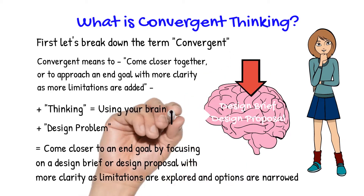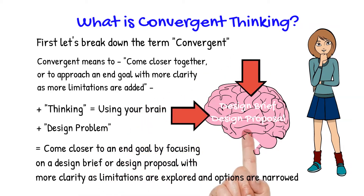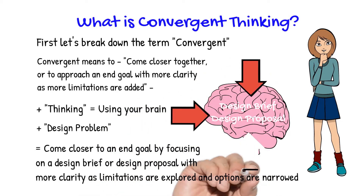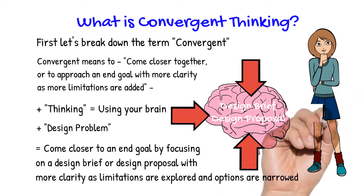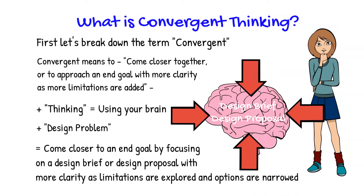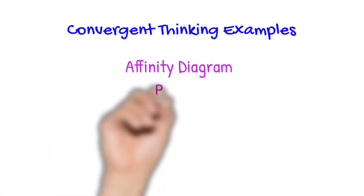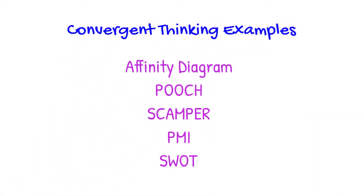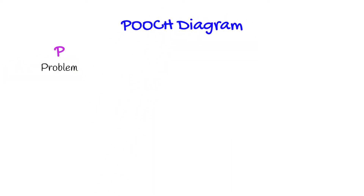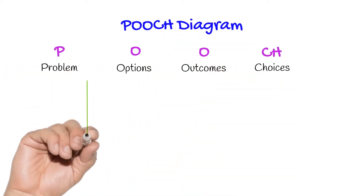As limitations are explored, options are narrowed. This step is applied after you've gone through a process of divergent thinking and need to narrow down your outcomes. Let's have a look at some convergent thinking examples: the affinity diagram, the POOCH model, the SCAMPER technique, PMI, and SWOT analysis.